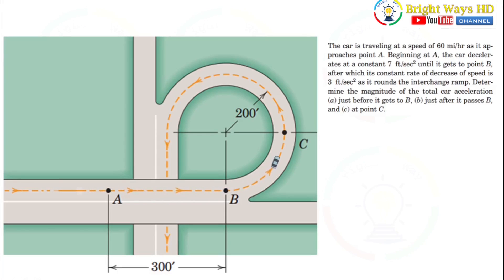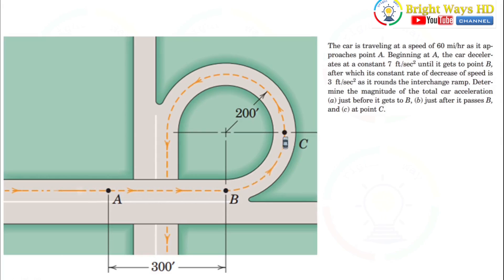The problem mentions that the car is traveling at a speed of 60 mph as it approaches point A. Beginning at A, the car accelerates at a constant 7 feet per second squared until it gets to point B, after which its constant rate of decrease of speed is 3 feet per second squared. As it rounds the interchange ramp, determine the magnitudes of total car acceleration: A just before it gets to B, B just after it passes B, and C at point C.